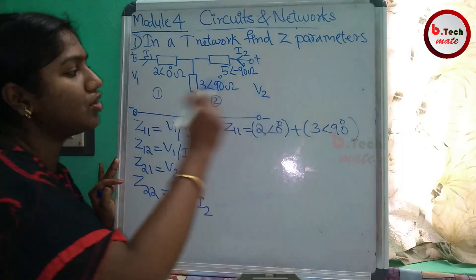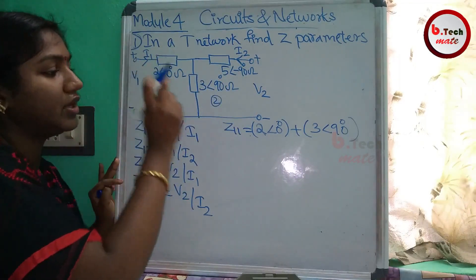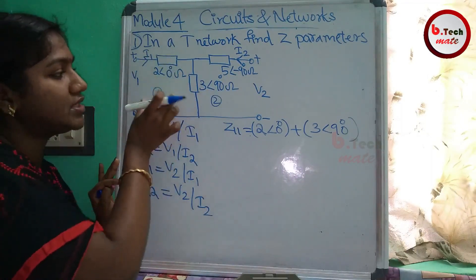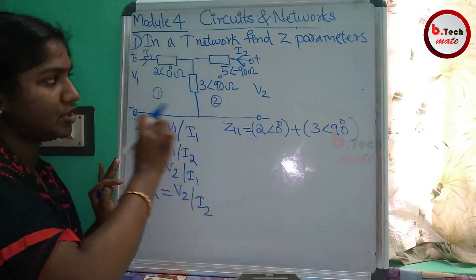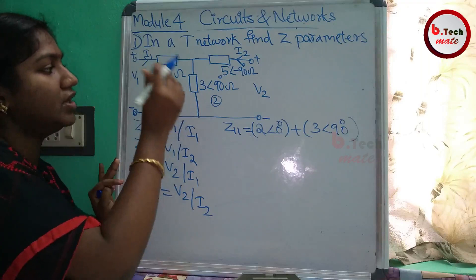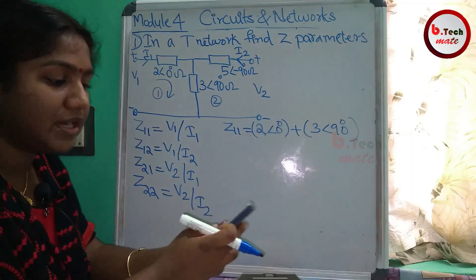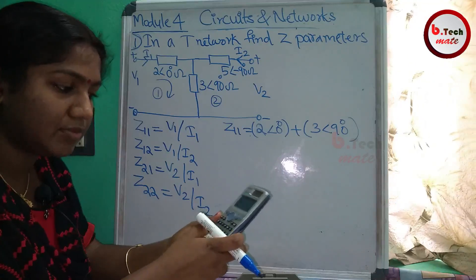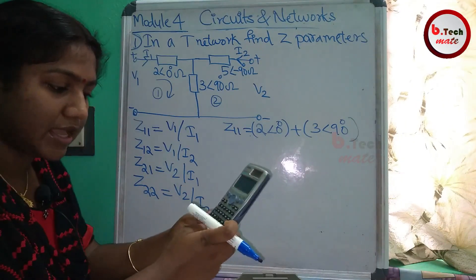This is the second mesh. Now the two impedances are connected. If you have two complex numbers, we can use 2 angle 0 plus 3 angle 90.